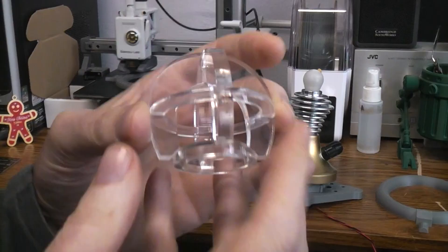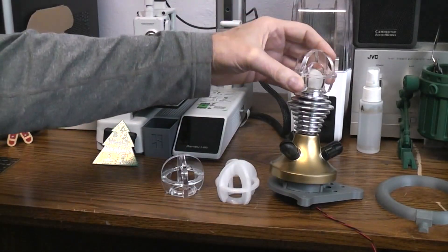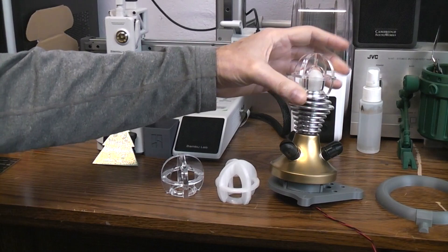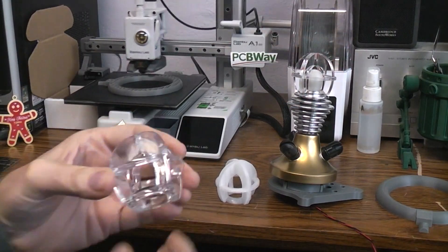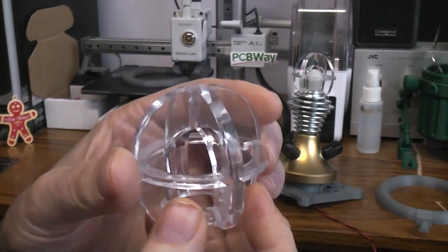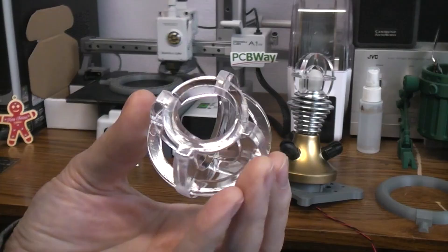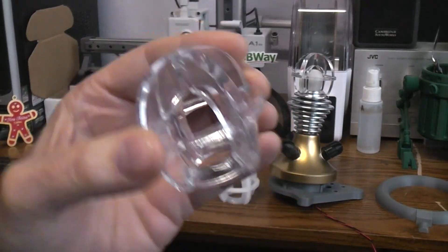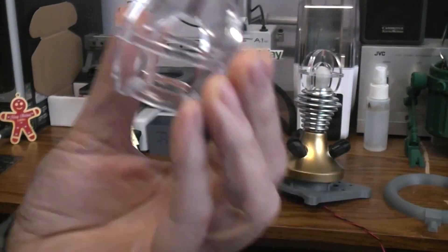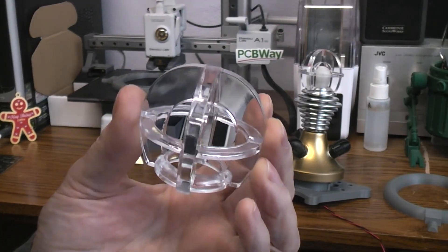So I CADed up these dimensions that I wanted, because you see this fits right on the top like that, and sent them off to PCB Way to have them just 3D printed in clear resin. Look how perfect that is, exactly identical. Even in a single quantity, this was like $15.50, very reasonable.